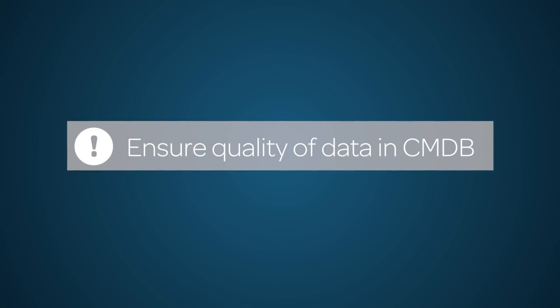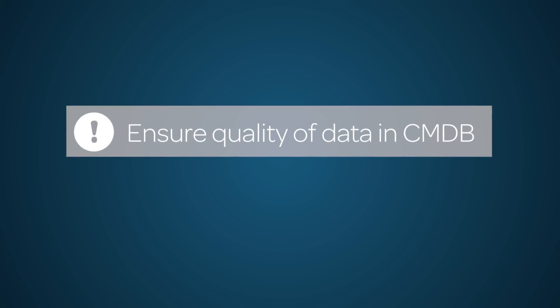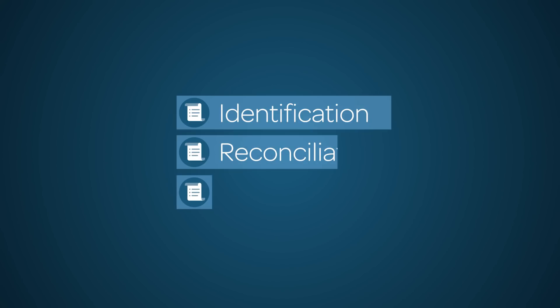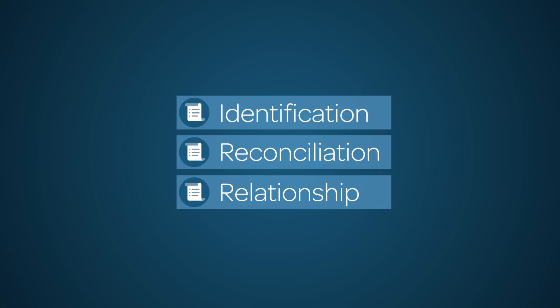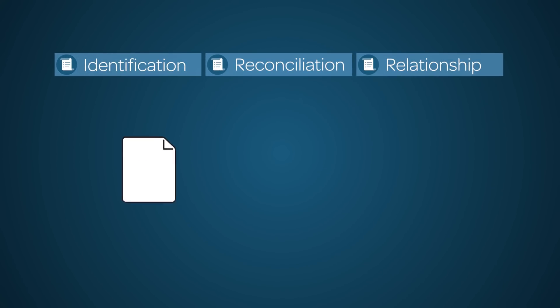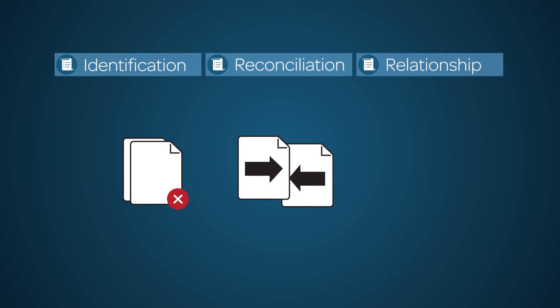An important method of ensuring the quality of data in the CMDB over time is having defined identification and reconciliation and relationship rules. These rules prevent duplication of CI records, aid in the reconciliation of data among different authoritative sources, and ensure that all desired relationships are established.